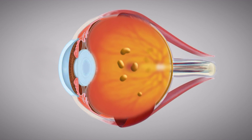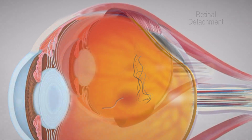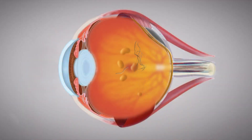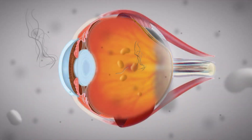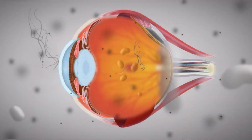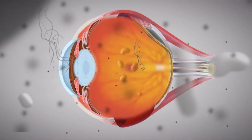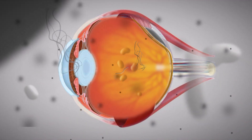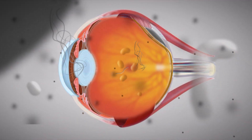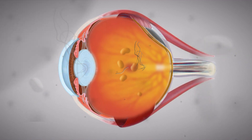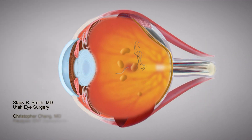Retinal detachment involves the retina pulling away from the tissues supporting it. It often happens spontaneously or suddenly. Risk factors include age, nearsightedness, history of eye surgeries or trauma, and family history of retinal detachments.